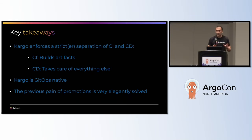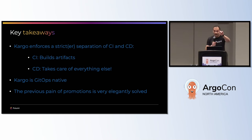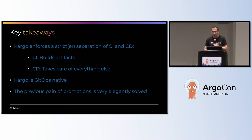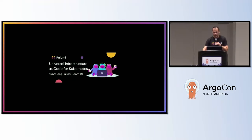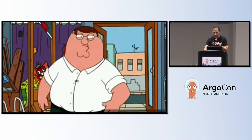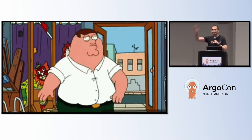The key takeaways: what you could see with Kargo here is that it enforces a stricter separation of CI and CD. CI is now really just for building artifacts; CD takes care of everything else. Kargo is GitOps-native and it takes away the previous pain of promotion in an elegant way. Follow up — I will upload the slides — and we also have a happy hour and a booth here. No time for questions, thank you!